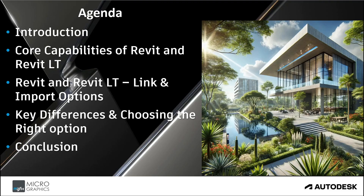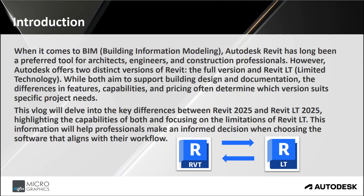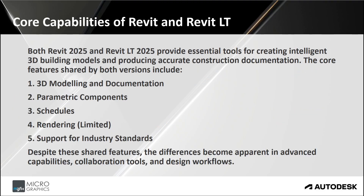When it comes to BIM — building information modeling — Autodesk Revit has long been a preferred tool for architects, engineers, and construction professionals. Autodesk offers two distinct versions of Revit: the full version and Revit LT. LT stands for Limited Technology. While both aim to support building design and documentation, the differences in features, capabilities, and pricing often determine which version suits specific project needs. This vlog will delve into the key differences, highlighting capabilities of both and focusing on the limitations of Revit LT to help professionals make an informed decision.